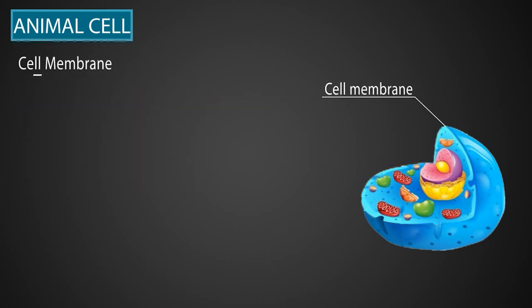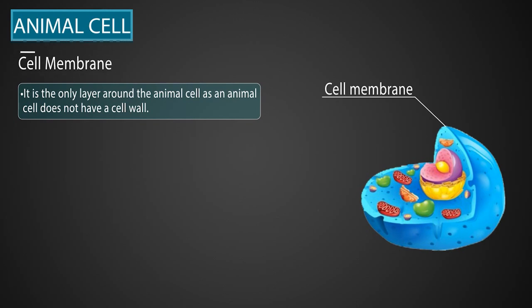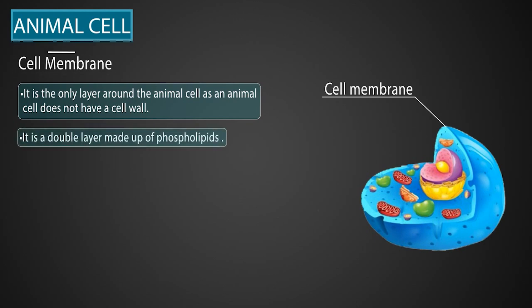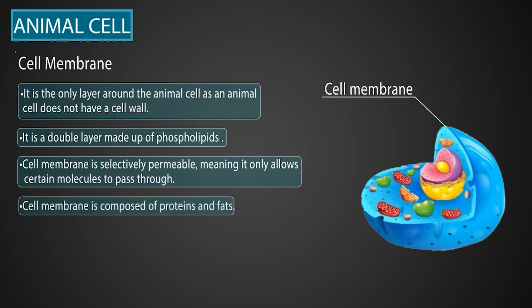Cell membrane. It is the only layer around the animal cell, as an animal cell does not have a cell wall. It is a double layer made up of phospholipids. The cell membrane is selectively permeable, meaning it only allows certain molecules to pass through. The cell membrane is composed of proteins and fats.